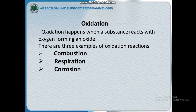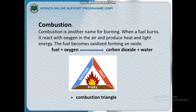Oxidation happens when a substance reacts with oxygen, forming an oxide. There are three examples of oxidation reactions: combustion, respiration, and corrosion. What is combustion? Combustion is another name for burning fuel. When a fuel burns, it reacts with oxygen in the air.